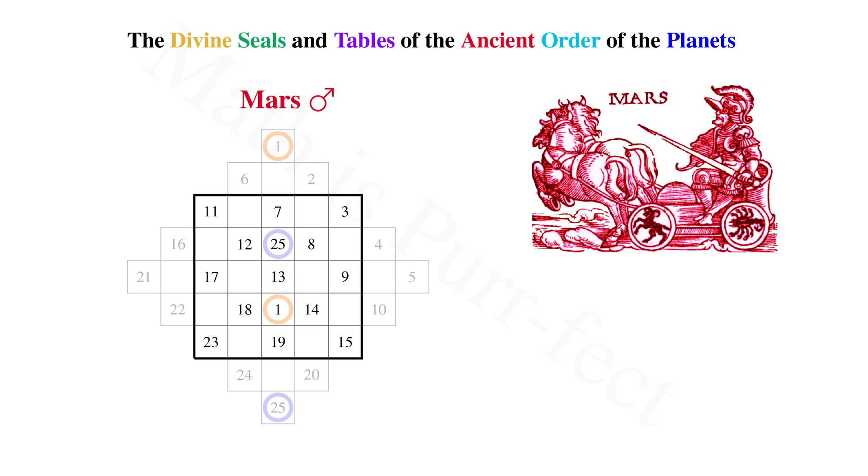We can do the same with the 5 and 21 in the middle row. Let's move 5 to the right of 17, and 21 to the left of 9.